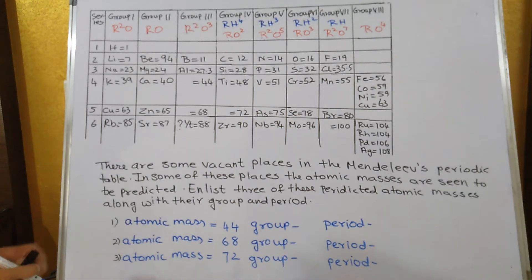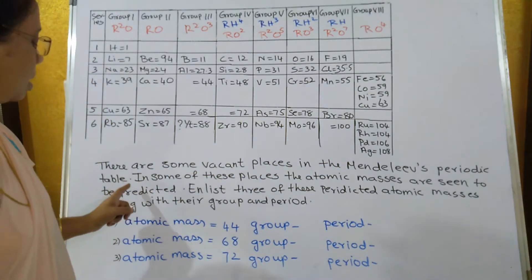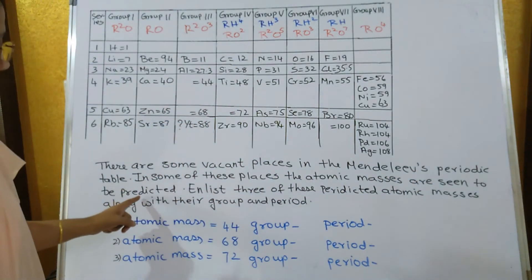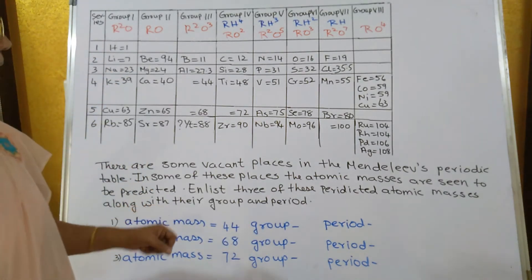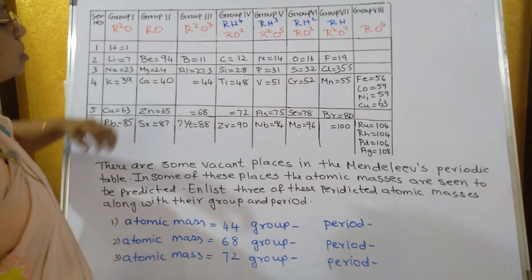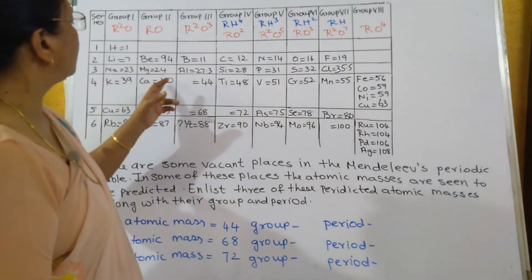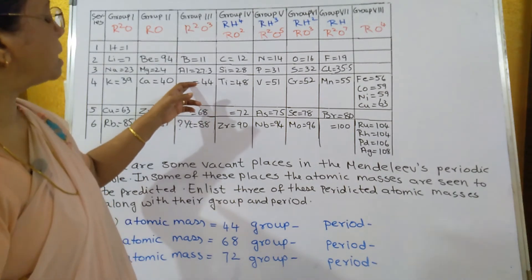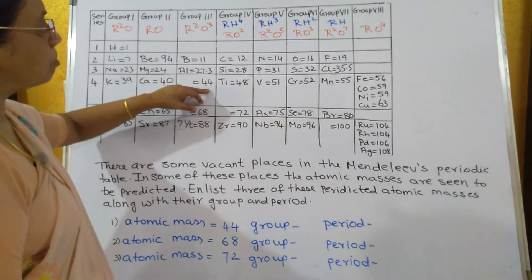On page 19, there is a question about vacant places in Mendeleev's periodic table where atomic masses are seen to be predicted. During Mendeleev's time only 63 elements were known, but while arranging the elements he found out the atomic mass of the next element after calcium — an element that was not yet discovered — and he predicted its atomic mass.